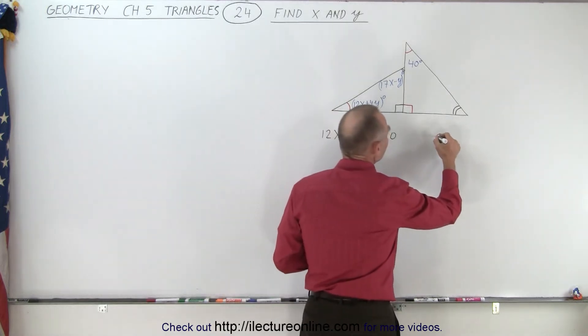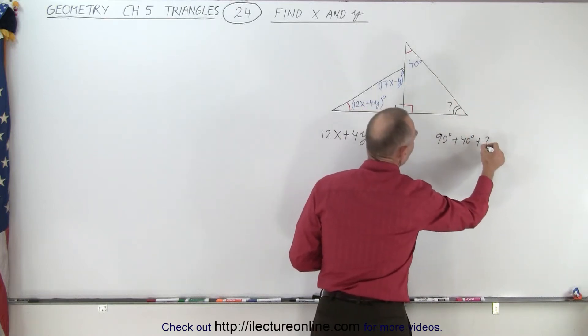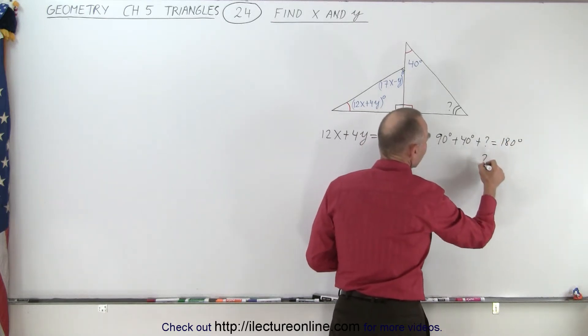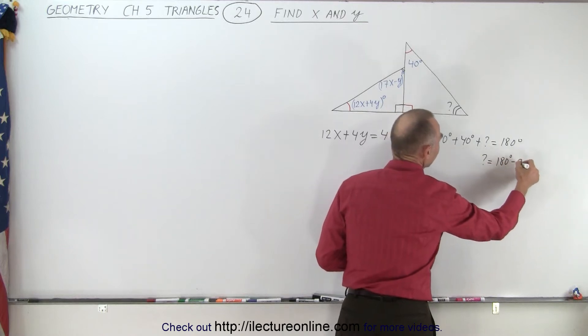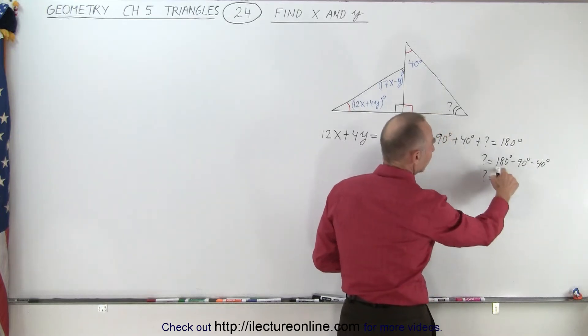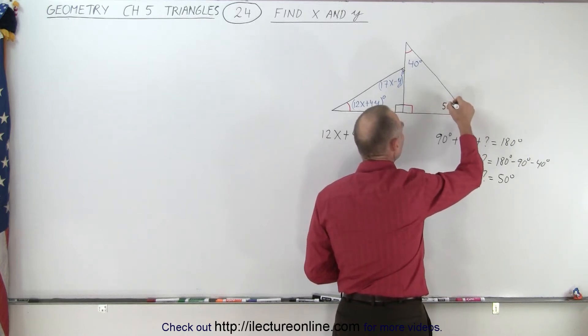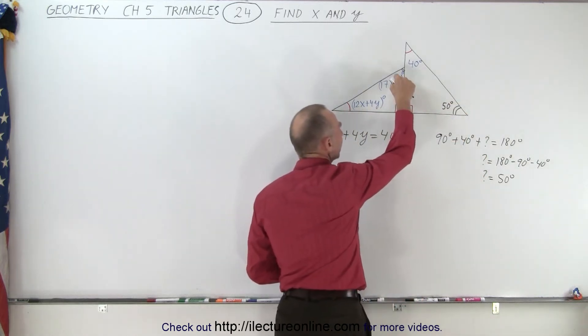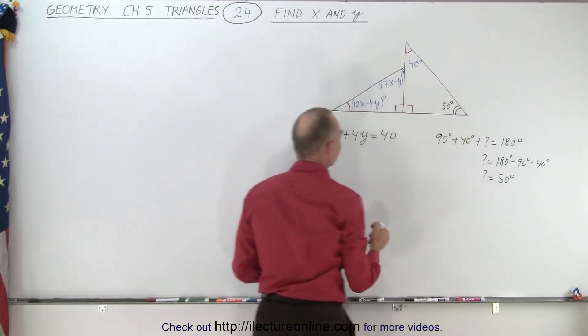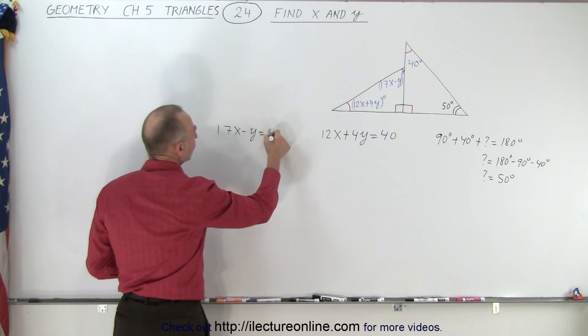So here we can say that 90 degrees plus 40 degrees plus the unknown angle right here must add up to 180 degrees. In other words, the unknown angle is equal to 180 degrees minus 90 degrees minus 40 degrees, and so therefore the unknown angle is 90 minus 40 or 50 degrees. So this here is a 50 degree angle. Now since this angle corresponds to this angle they must have the same angular measure, so therefore we can also say that 17x minus y must equal to 50.